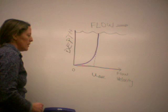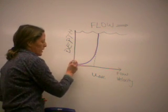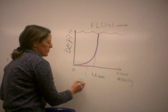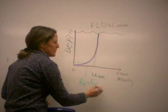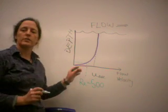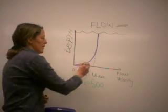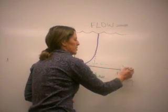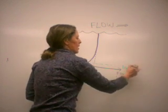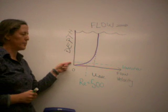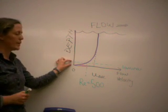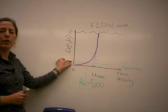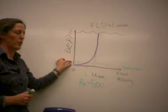There's some point at which the flow speed is such that the Reynolds number equals 500, which is defined as the boundary between laminar flow and transitional flow. This level in the flow is called the laminar sublayer, and sometimes the viscous sublayer, because in this zone right near the boundary, the viscous forces dominate over the inertial forces and the flow is laminar.